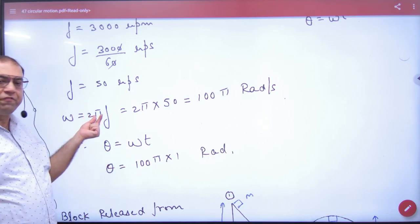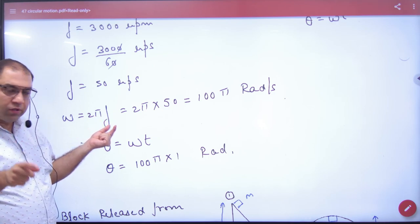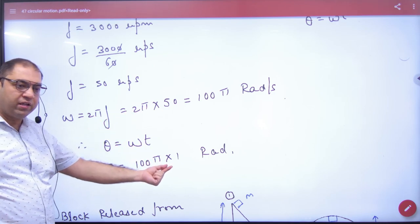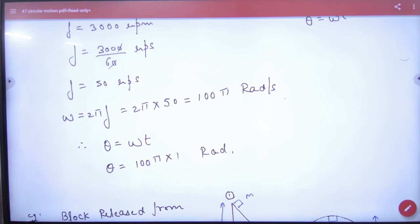What is omega? 2 pi frequency. This is omega. Time is given. Radians answer. Right?